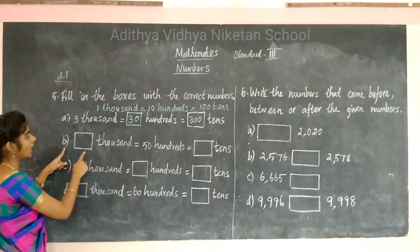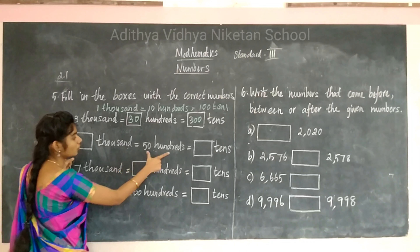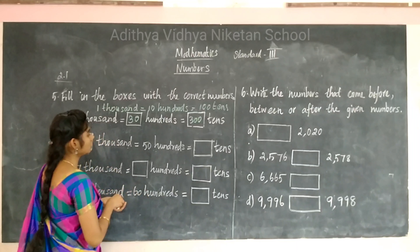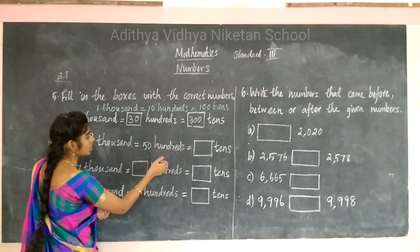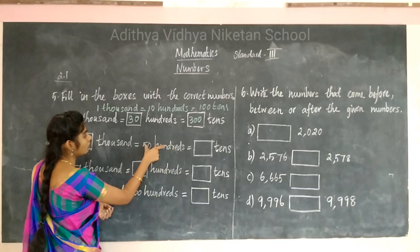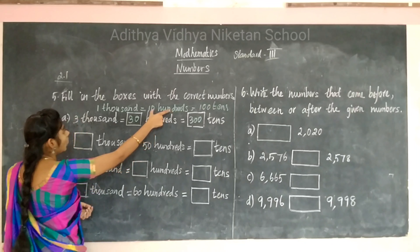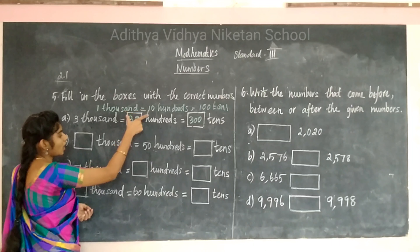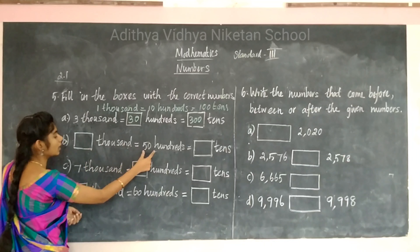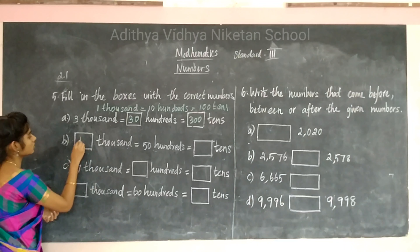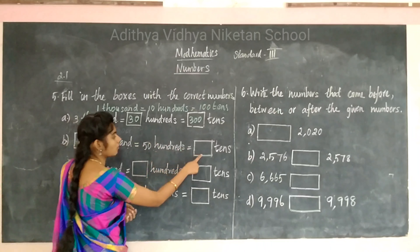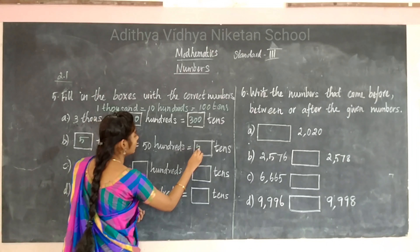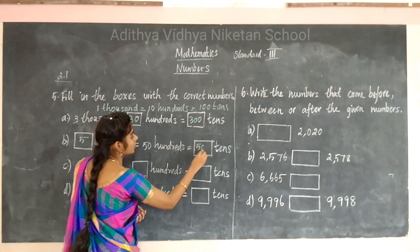The next sum: blank 1000 equals 1500 hundreds — and the related tens value. Since 10 hundreds make 1000, then 1500 hundreds means 5000. And 1500 hundreds have 500 tens.